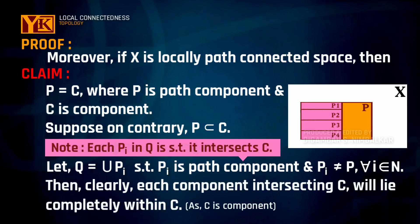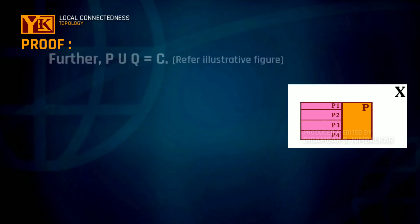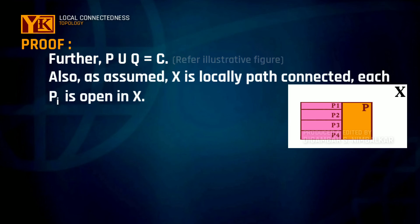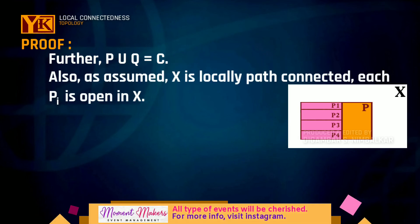Then clearly these components will completely lie inside C, as C is a component, and further P union Q equals C. And as we are assuming X is locally path connected, each path component in X will be open.